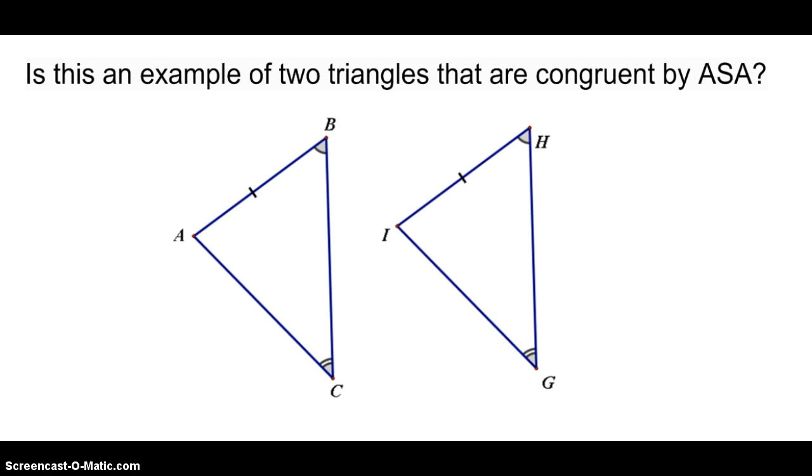Recall that angle-side-angle is when you have an included side between the two angles. If I look here, I have that angle B is congruent to H, and C is congruent to G, and side AB is congruent to HI. This side is not the included side. So this is actually angle-angle-side.